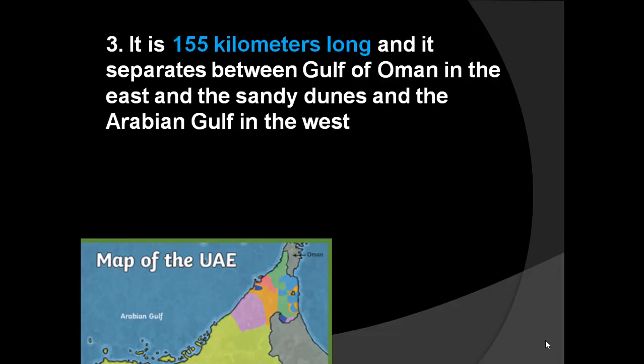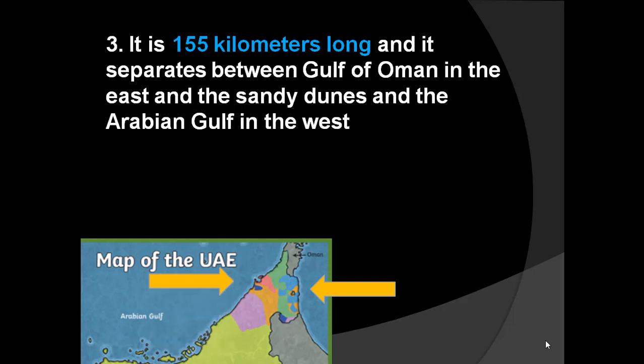The mountain range of the UAE is 155 kilometers long and it separates the Gulf of Oman in the east from the sandy dunes and the Arabian Gulf in the west. So the mountain ranges create a separation between the Arabian Gulf and the Gulf of Oman, and they are located in the northern part of the country.